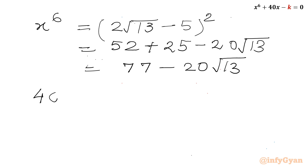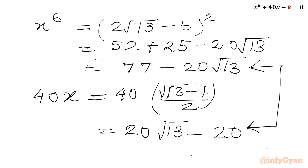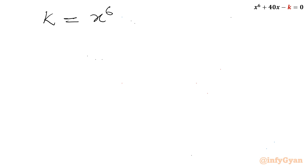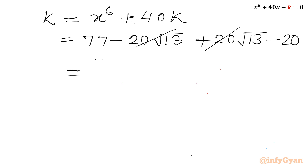And our value was 40x, which was 40 times root 13 minus 1 over 2, so 20 root 13 minus 20. So we have to add these two values: x to the power 6 plus 40x — this is our k. So k is equal to x to the power 6 plus 40x. x to the power 6 was 77 minus 20 root 13, and 40x was 20 root 13 minus 20. These two root 13 terms will cancel. I will write 77 minus 20, so our final answer will be 57.